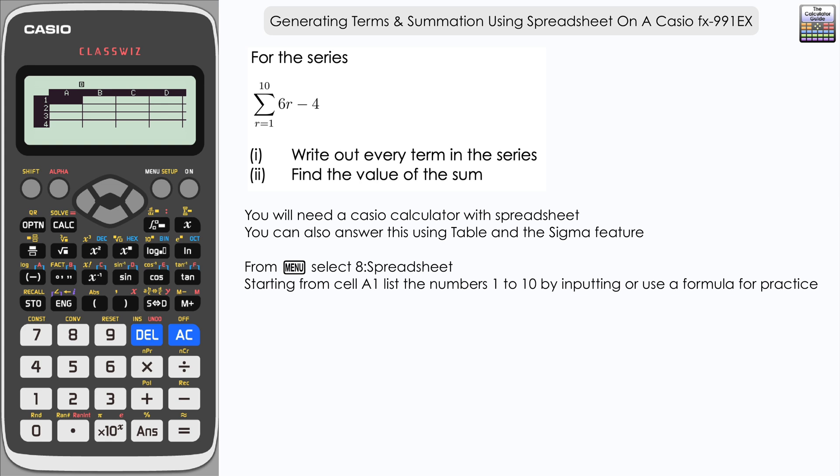There we are going to have to list the term numbers, so first, second, third, so then a number from one to, well, our series goes up to ten so we need a list from one to ten. Now you can just go down and input the numbers one to ten if you feel that is best or the quickest. I'm going to show you how to do that using a formula and it will give us a little bit of extra practice at using the formulas in the spreadsheet mode.